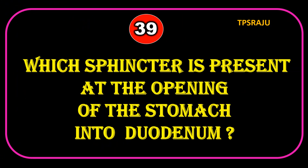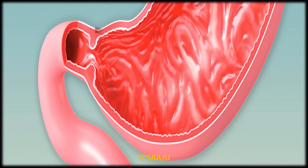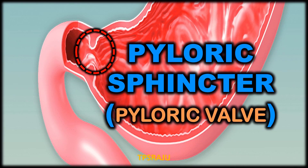Which sphincter is present at the opening of the stomach into the duodenum? The pyloric sphincter.